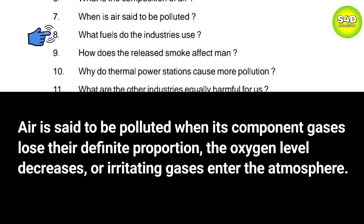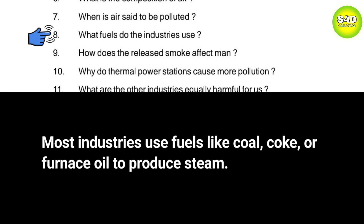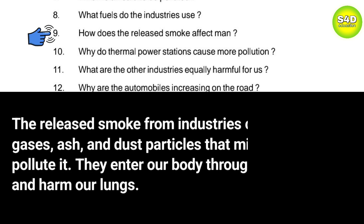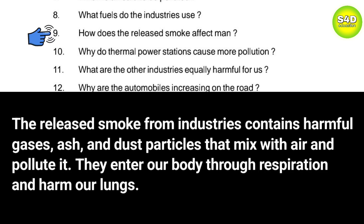Question 8: What fuels do the industries use? Answer: Most industries use fuels like coal, coke, or furnace oil to produce steam. Question 9: How does the released smoke affect man? Answer: The released smoke from industries contains harmful gases, ash and dust particles that mix with air and pollute it. They enter our body through respiration and harm our lungs.